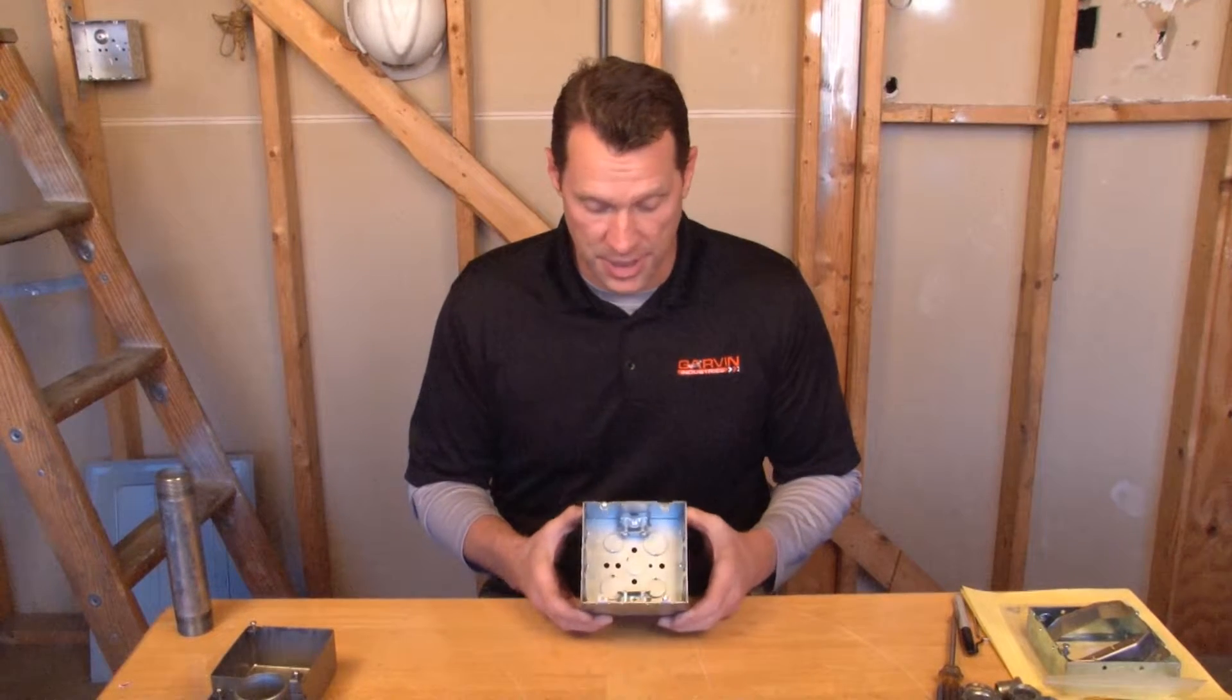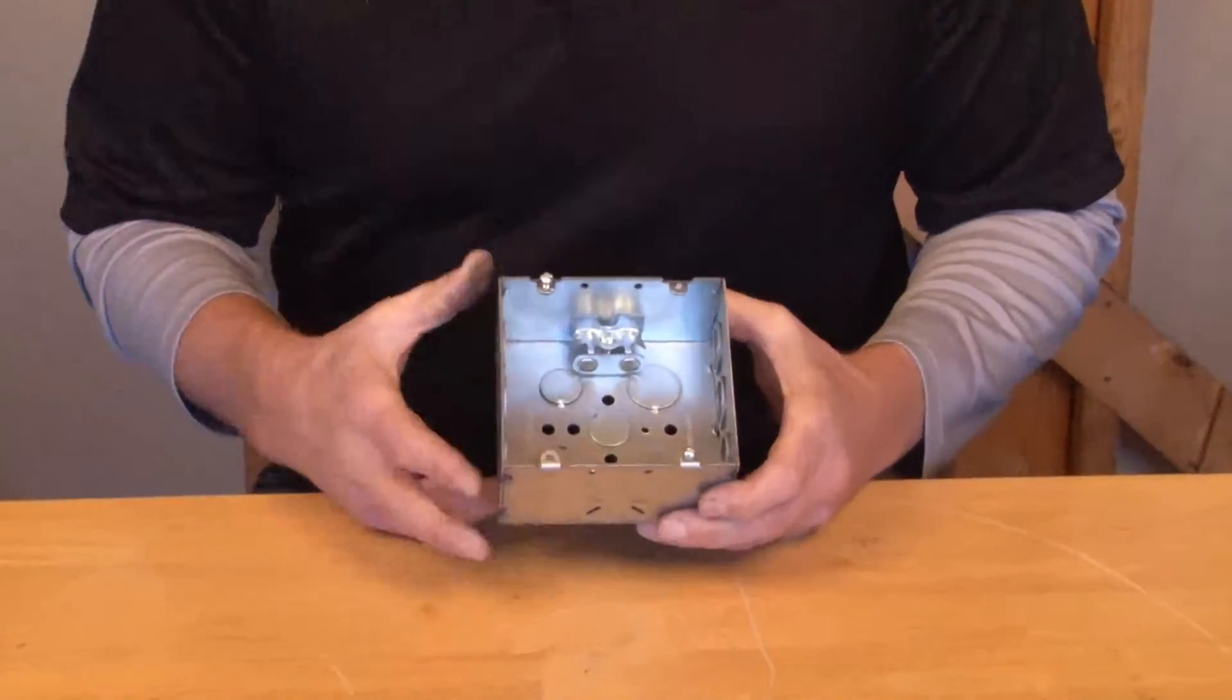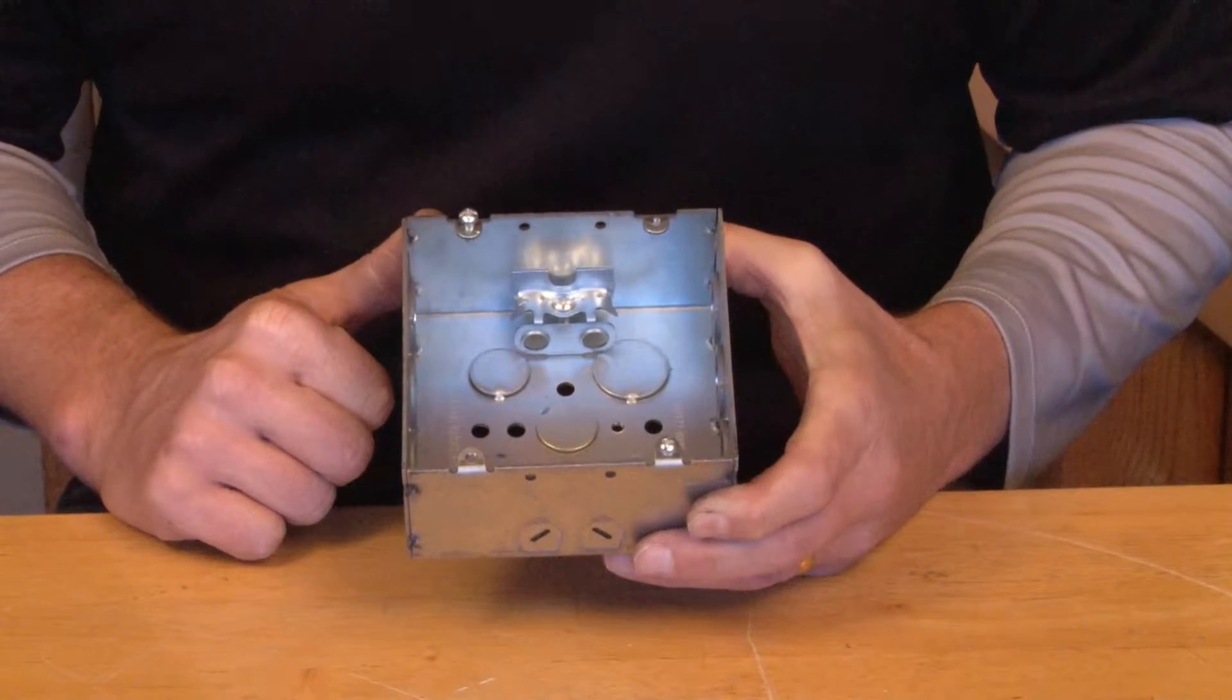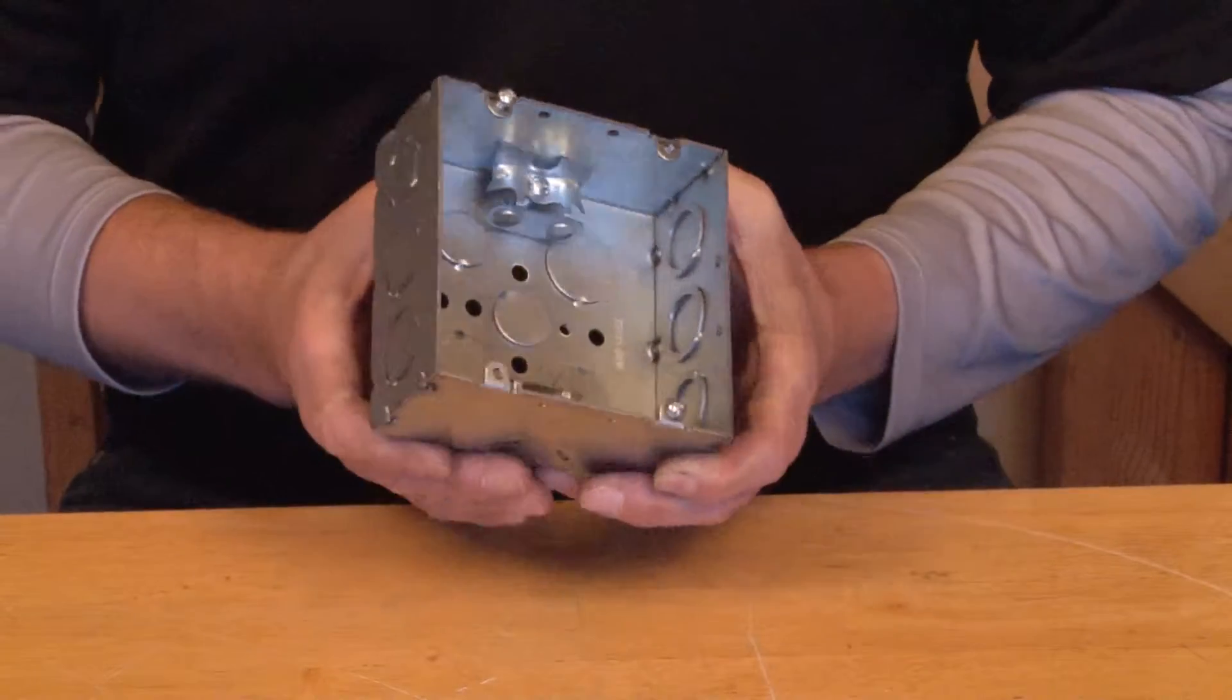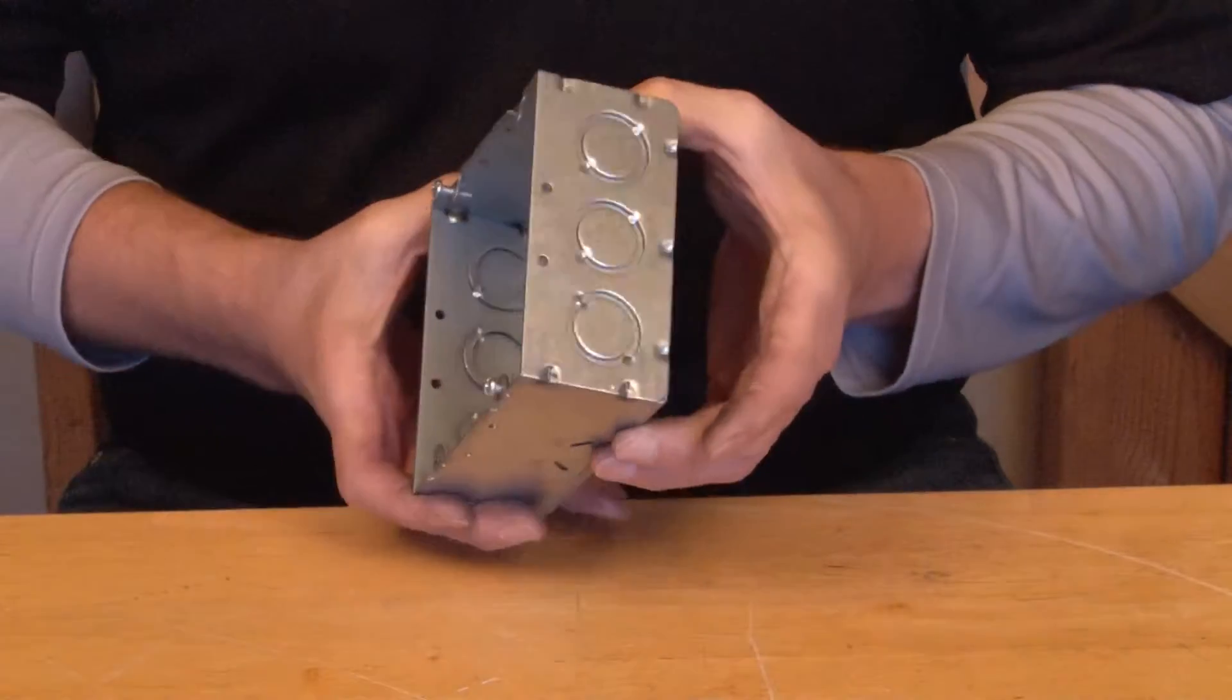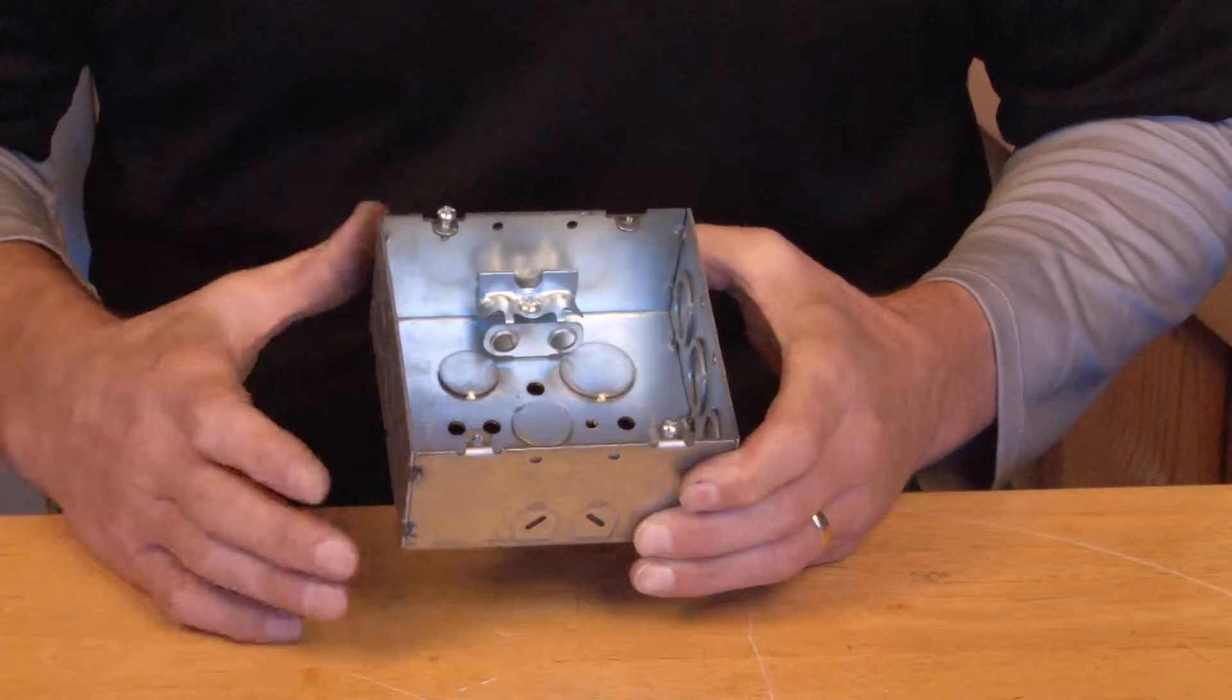72171BXW is a 4 and 11/16 inch electrical junction box that offers four clamps for BX cable. It also offers two sides that have half and three-quarter inch conduit knockouts, as well as conduit knockouts in the bottom of the box.